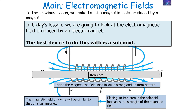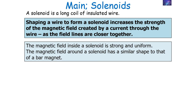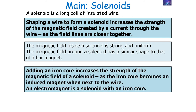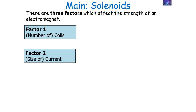Placing an iron core inside the solenoid increases the strength of the magnetic field even further. A solenoid is a long coil of insulated wire; shaping a wire into a solenoid increases the magnetic field as the field lines are closer together. An electromagnet is a solenoid with an iron core, where the iron core becomes an induced magnet next to the wire. There are three factors that affect the strength of an electromagnet: the number of coils in the solenoid, the size of the current through the wire, and the core placed inside the electromagnet.